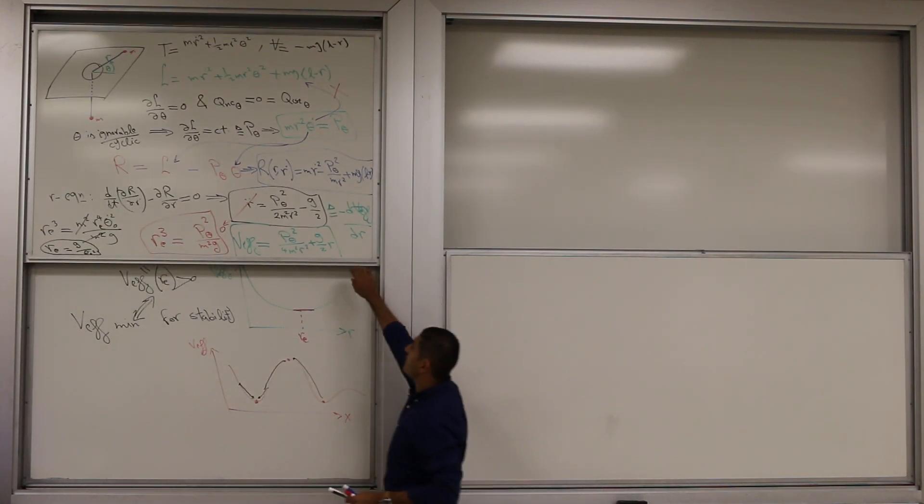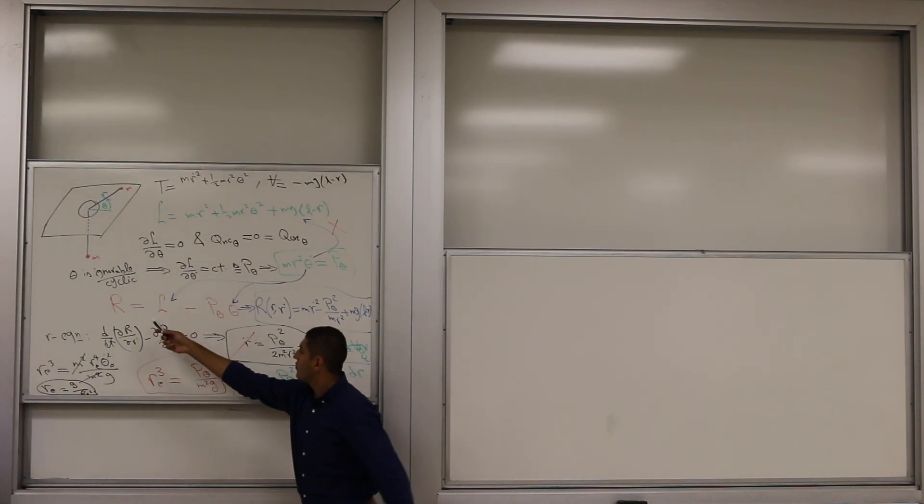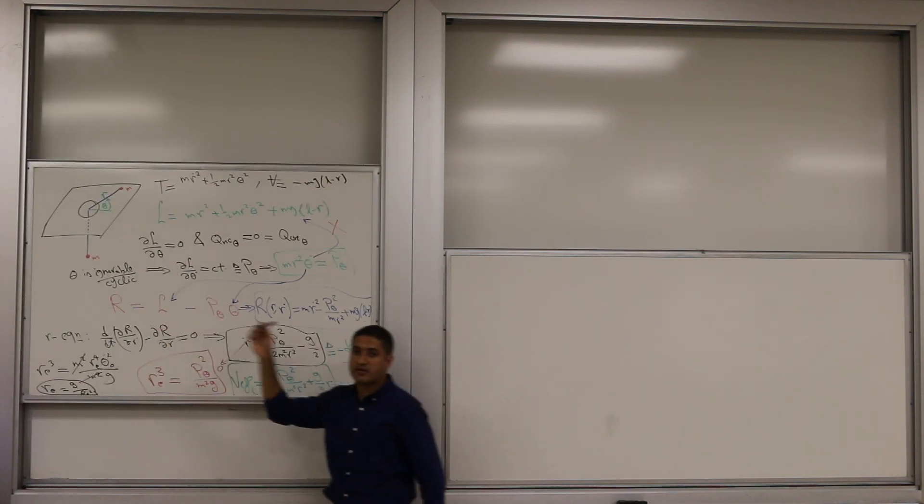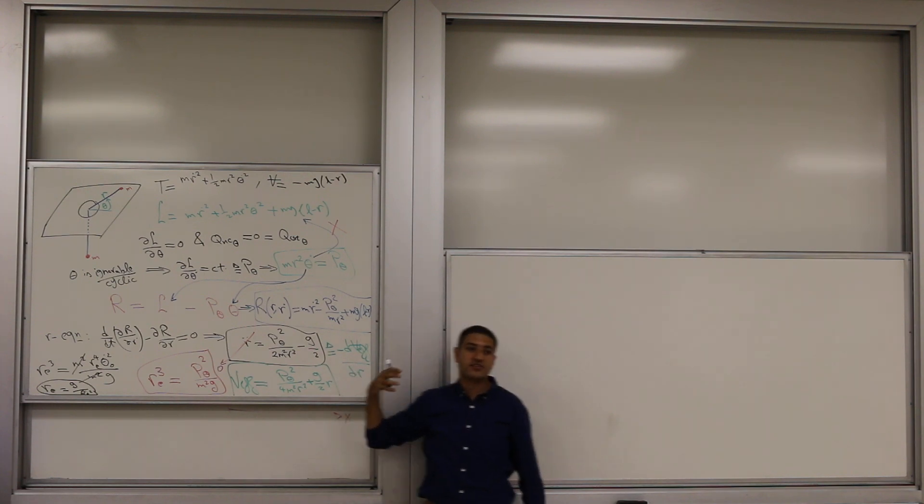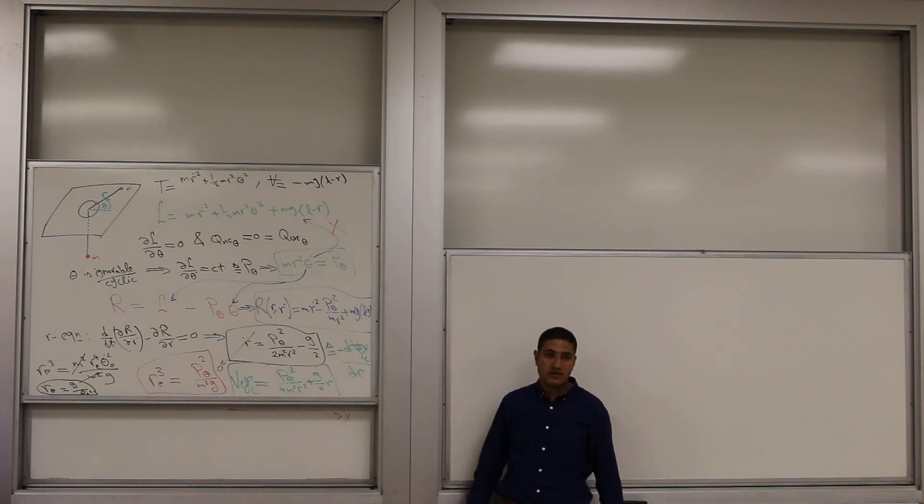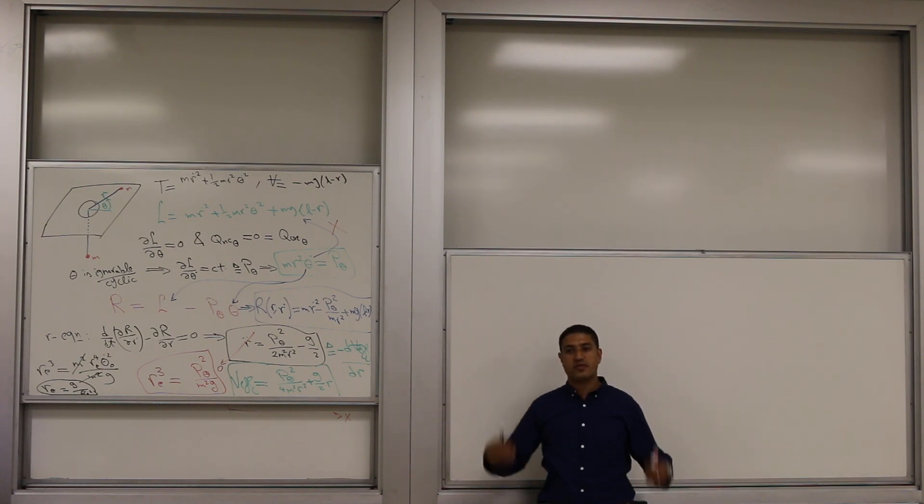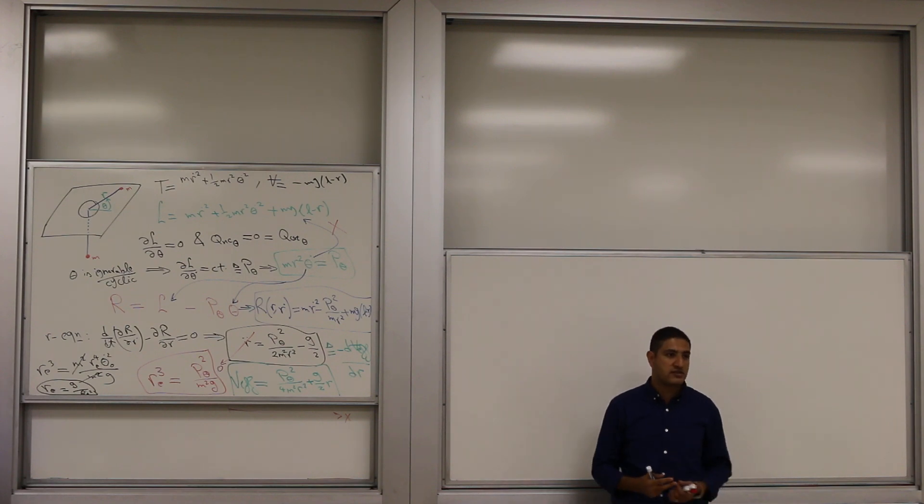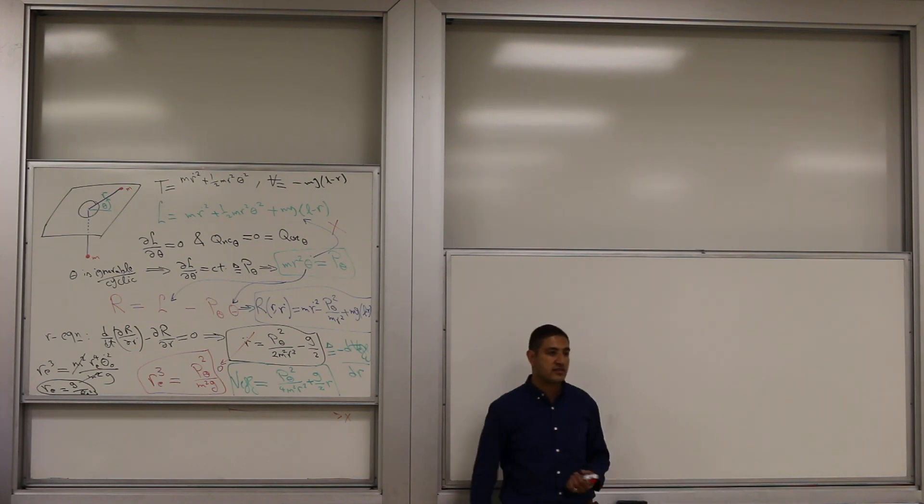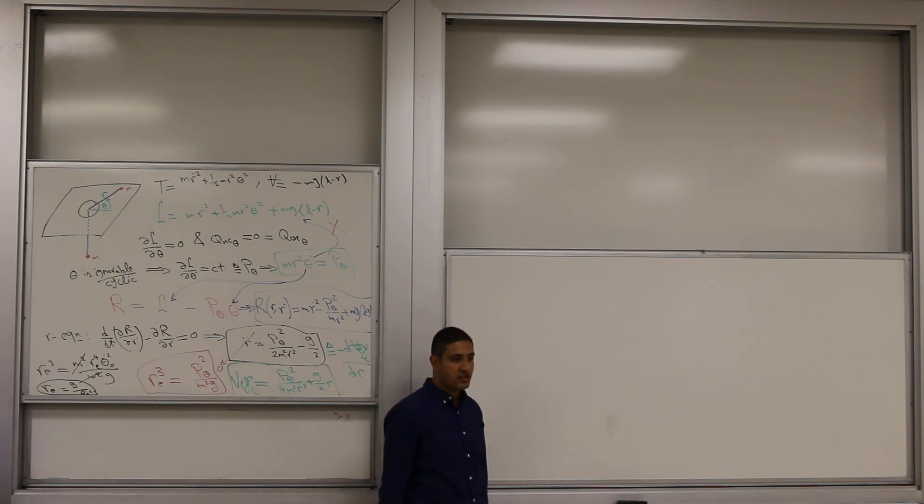For me now we will generalize the Routhian procedure. This is the Routhian procedure. We kind of like it why? Because it allows us to reduce our dynamics from two degrees of freedom to one degree of freedom. So you're going to generalize this procedure. For more reduction in general, I start with n cues and I have c cyclic coordinates. I want to remove these c cyclic organs and live with n minus c cubes.